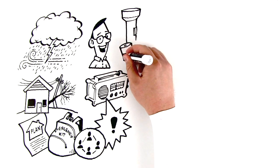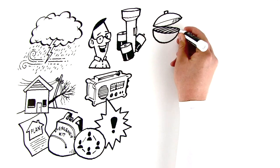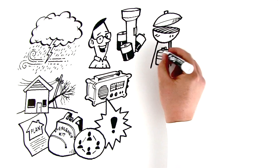Stow flashlights and extra batteries around your house in case of power failure. Fireplaces, wood stoves, barbecues, and camp stoves can be used for emergency cooking.